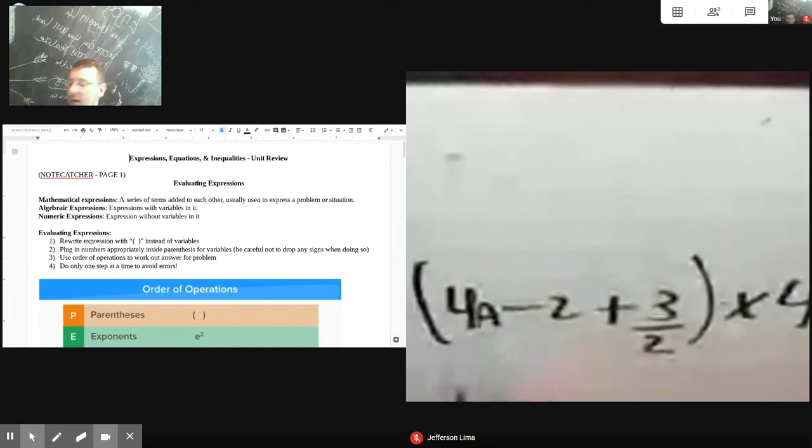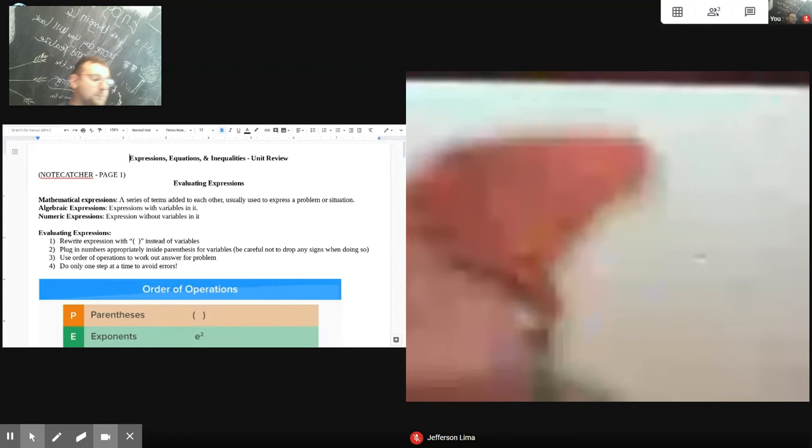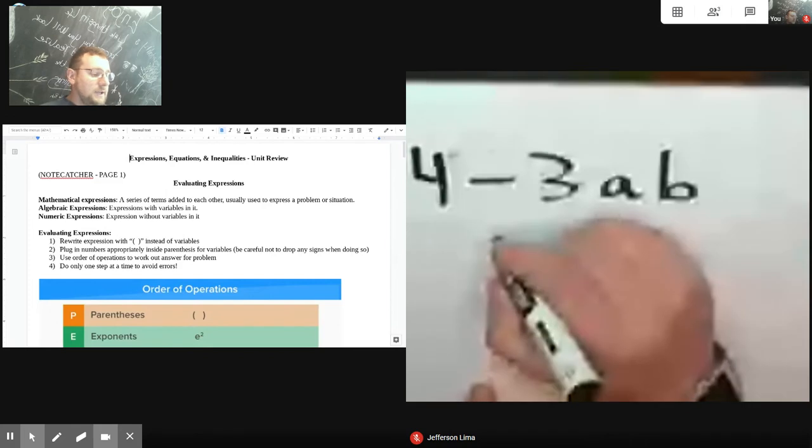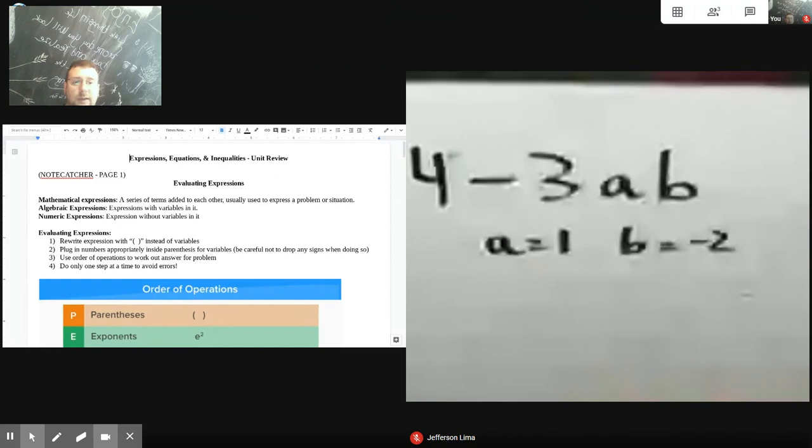So the next part is how to evaluate expressions. And as you can see on the left side, the steps to do that is to just rewrite the expression that is given. So here's an example, four minus three AB, but I'm going to say that A is one and B is negative two. So we have to evaluate this expression. How would we do that?